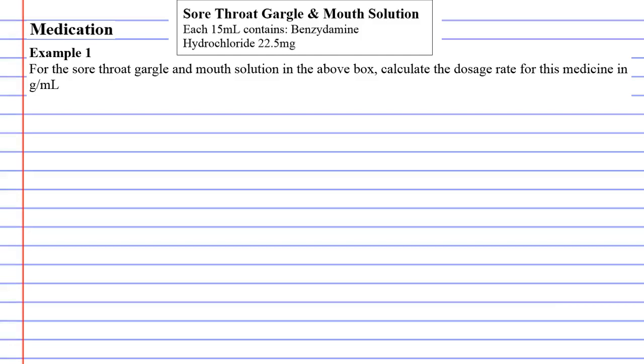Medication example one: for the sore throat gargle and mouth solution in the box above, calculate the dosage rate for this medicine in grams per milliliter. When I work these things out, the best method for me personally is a method I learned from Stuart Palmer.